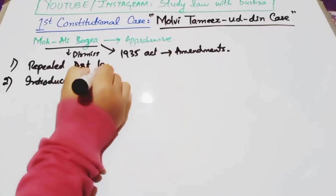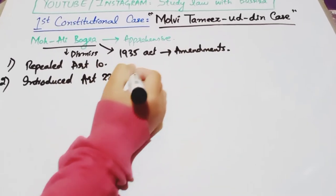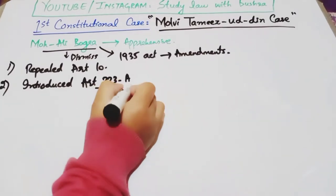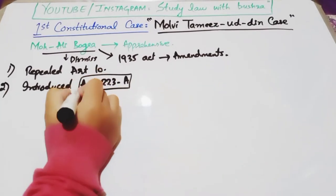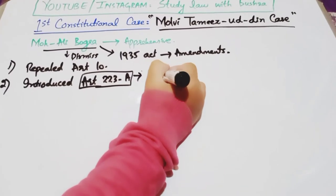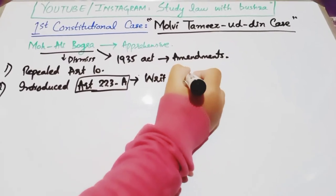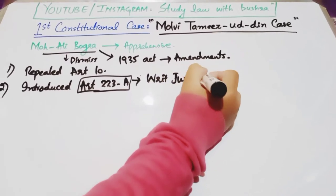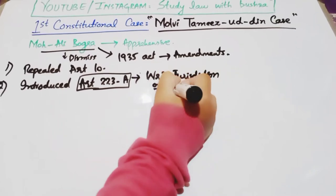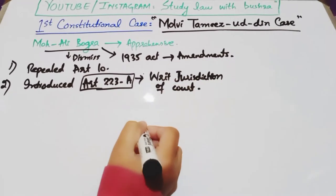Secondly، انہوں نے ایک نیا Article 223A، Government of India Act 1935 میں introduce کیا۔ Article 223A نے writ jurisdiction of the court کو establish کیا — یعنی court کا دائرہ اختیار قائم کیا۔